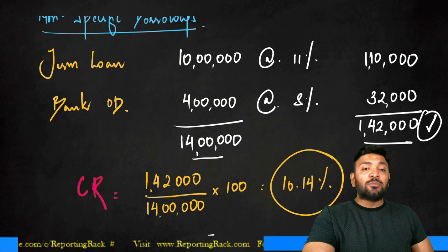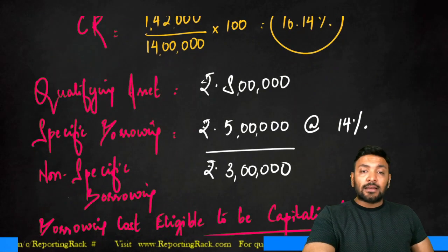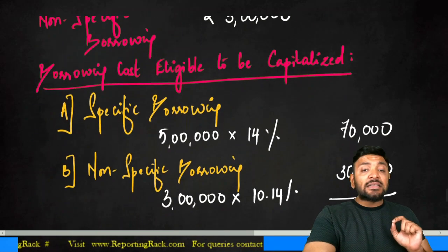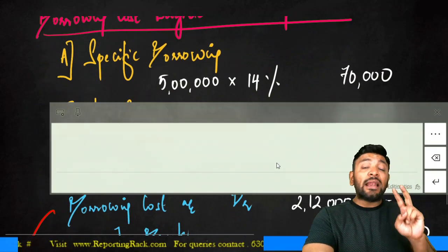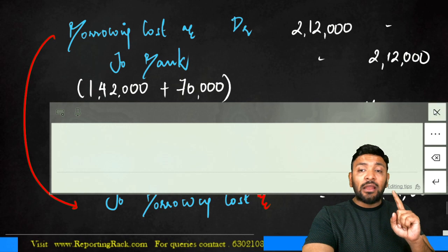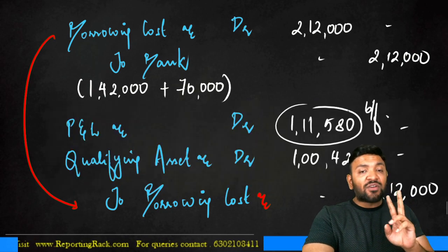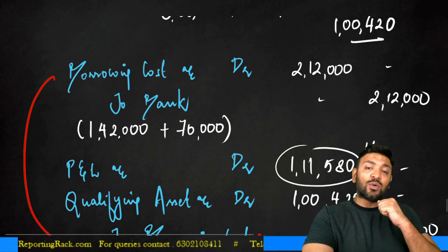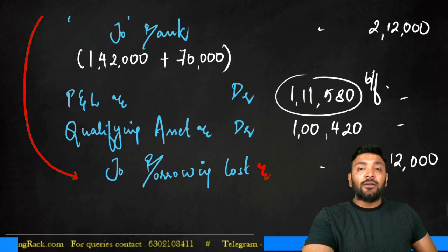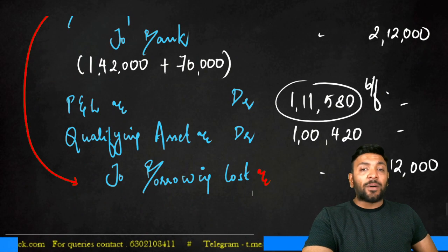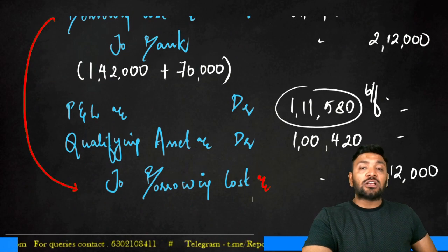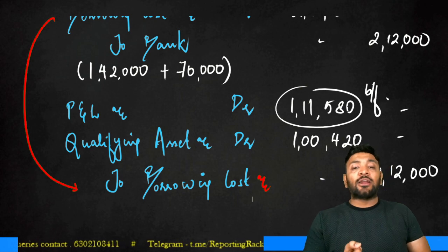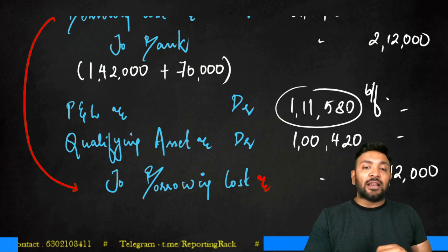This concept of capitalization rate only arises when there is more than one non-specific borrowing. If there is only one non-specific borrowing, the interest rate of that borrowing is used directly. These are the two entries needed to ensure borrowing cost is capitalized to the extent it relates to a qualifying asset, with the balance charged to P&L.